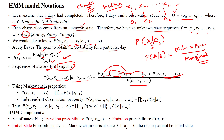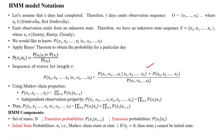The Markov chain property states that the next state depends only on the current state, denoted as the probability of the next state given the current state — P(xi | xi-1). Based on this independent observation Markov chain property, we can express the likelihood as a product: the probability of observations o1, o2, ..., oT given states x1, x2, ..., xT equals the product from i=1 to T of P(oi | xi) — the i-th observation generated by the i-th state. This is multiplied by the product of transition probabilities: the probability of the next state given the current state.